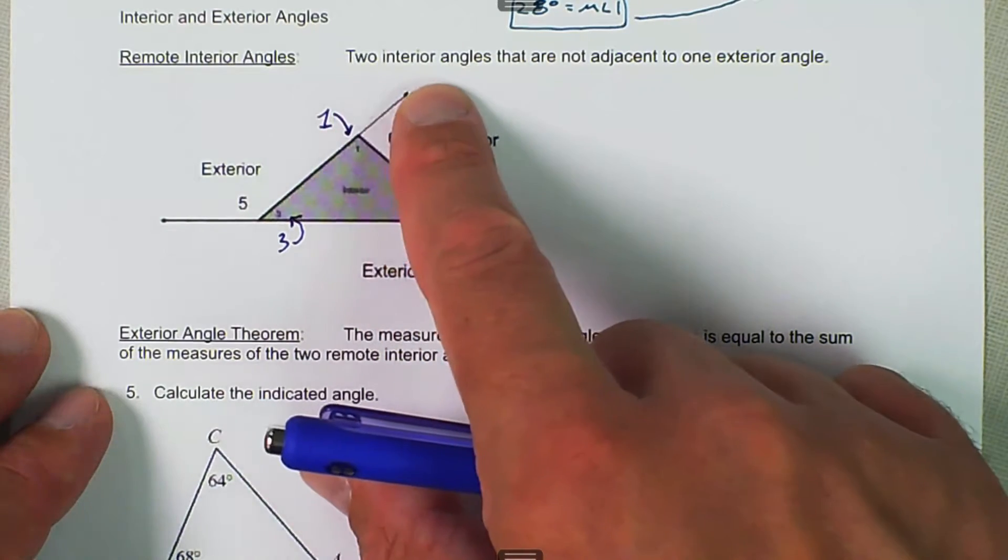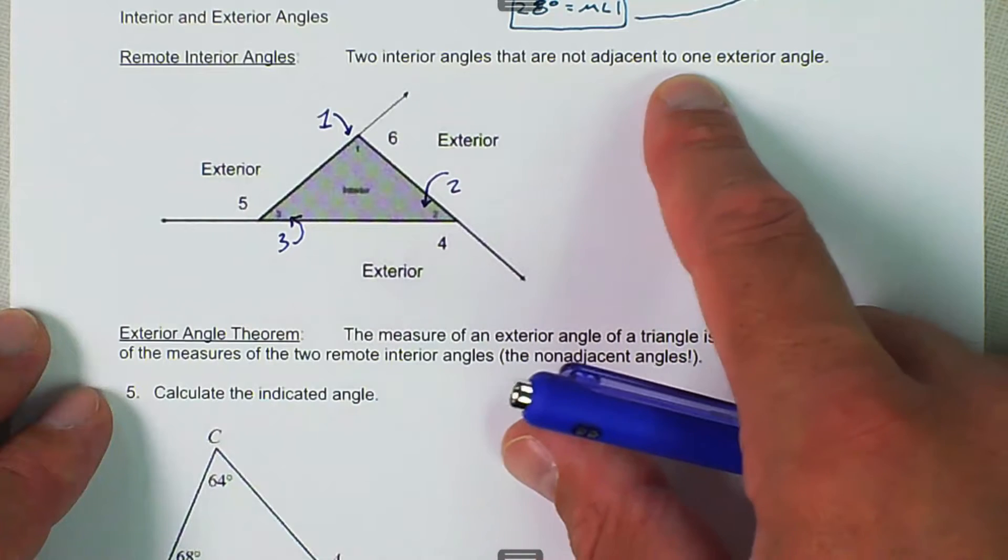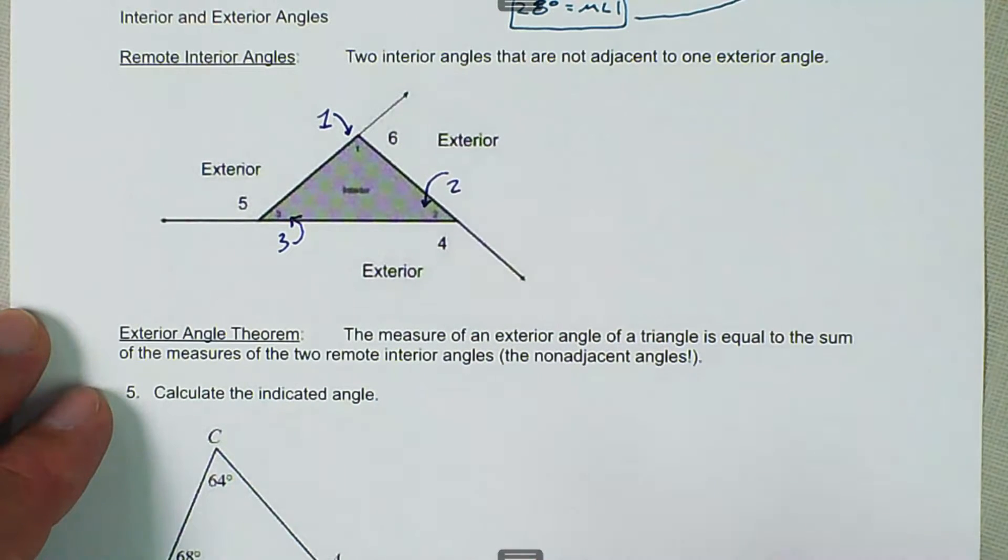So two interior angles that are not adjacent to one exterior angle. If we're looking at angle 1 and angle 3, they are remote interior to angle 4.